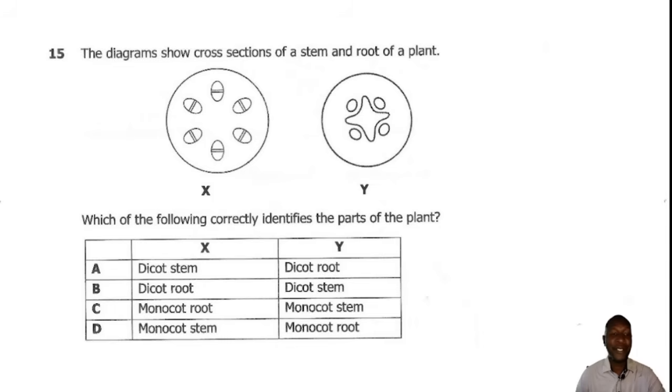Question 15. The diagram shows cross-sections of a stem and root of a plant. Which of the following collectively identifies the parts of the plant? We have X and in X we can see the vascular bundles are properly aligned in a nice ring. So this is a dicot stem. Then when you come to Y, we can see that the xylem at the center here is forming a star shape. So this is a dicot root. So the correct answer is A.